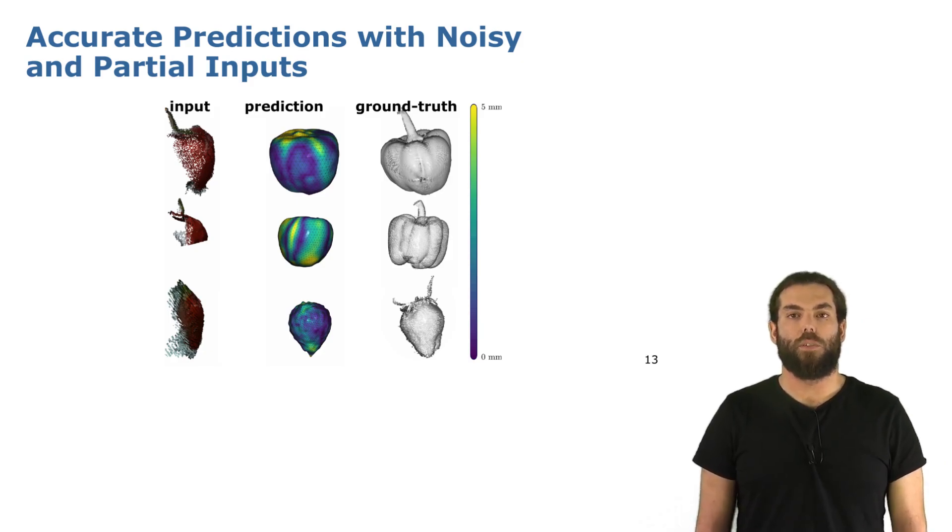If we look closely at the results here we have on the left our partial input where you see both sweet pepper and strawberries in the last row and also the ground truth on the right and our prediction in the middle. Our predictions are color coded so that you can get a better idea of where the reconstruction errors are mostly coming from. You notice that most of the reconstruction errors are coming from on the bottom and on the top part of the fruits which are the ones where we have less information because those are the ones that are typically occluded in real situations.